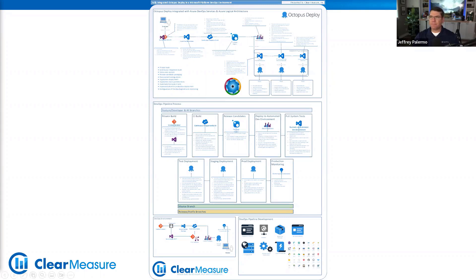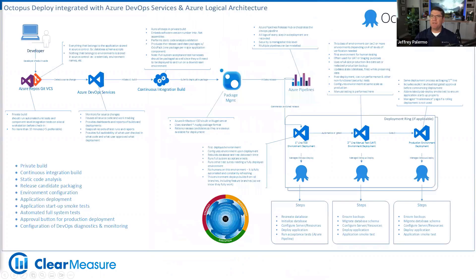We're going to focus on some of the steps in the top one-third: from builds to multiple layers of automated testing, to packaging release candidates, to basic static code analysis, and then packaging and getting ready for deployments.